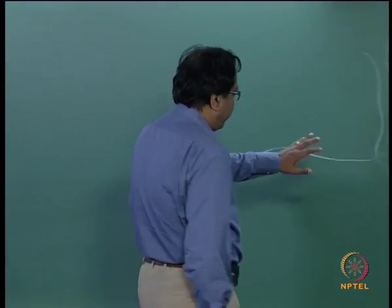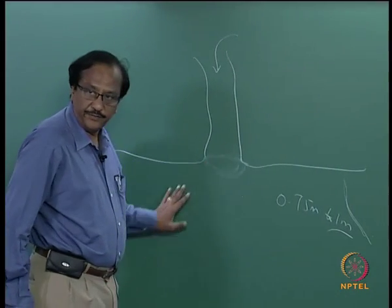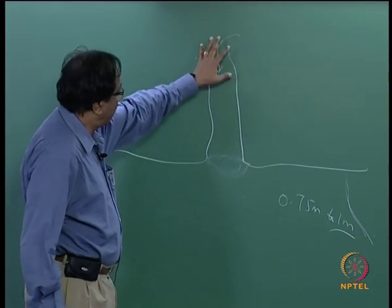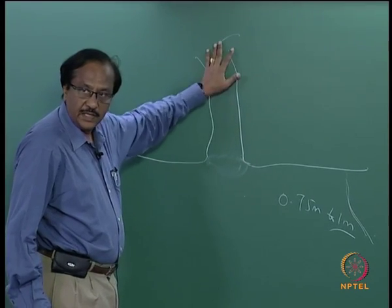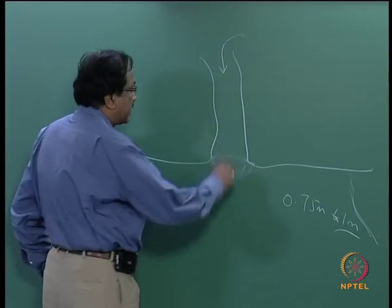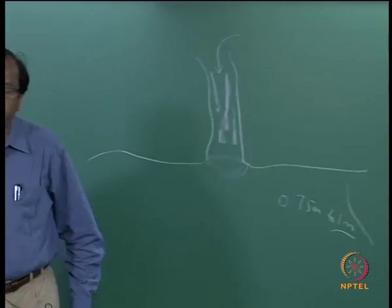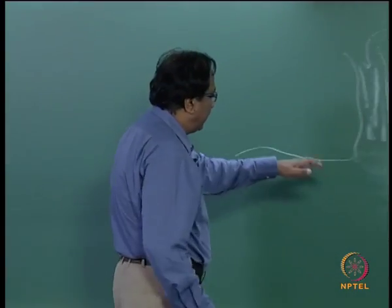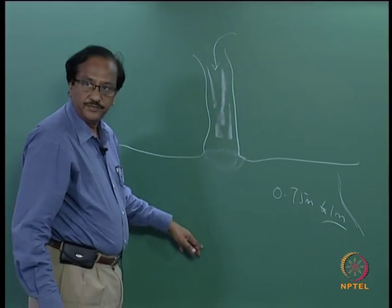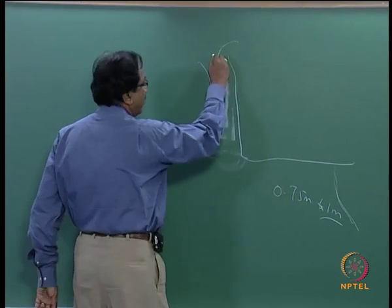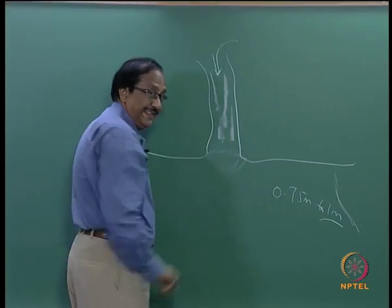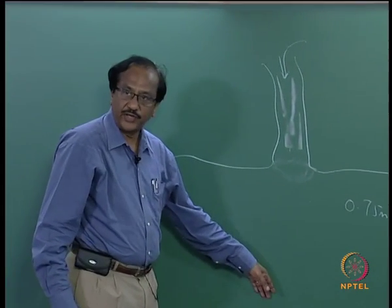On one side you have accumulation of sand from longshore sediment transport, and on the other side there is not much flow and no proper maintenance of the river. Proper maintenance means if the river is getting shallower it has to be dredged so that you have sufficient depth and water can easily exchange. During monsoon, when there is significant flow in the river, this gets flushed off.